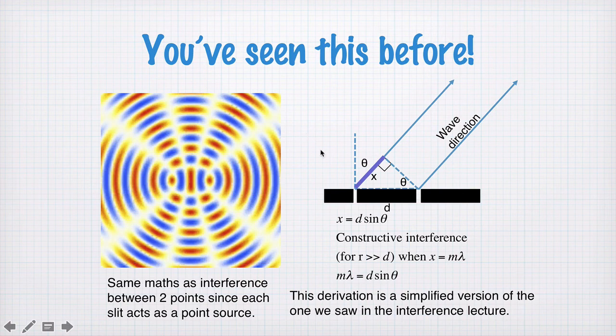I'm going to show you now a much simpler derivation for that condition. If we imagine waves propagating a long way from the slits, so the distance to the position over here where we're considering the interference is a long way from these slits, what we require for constructive interference is that this path length difference here, x, so the difference in path length for light coming from this slit compared to light coming from this slit. This path length difference here is an integer number of wavelengths.